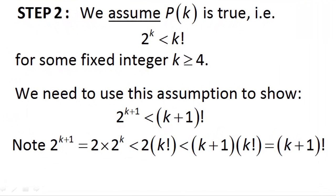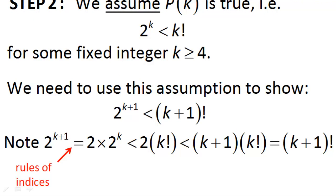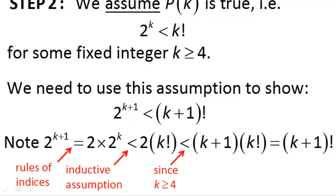We can do this quite easily. First we say that 2 to the power k+1 is equal to 2 times 2 to the power k, using the rules of indices. Then we bring in our inductive assumption — the critical step — and say that 2 to the power k is smaller than k factorial. We can also say that 2 times k factorial is smaller than (k+1) times k factorial, because k is greater than or equal to 4. And using the definition of the factorial, (k+1) times k factorial equals (k+1) factorial.